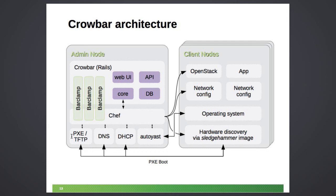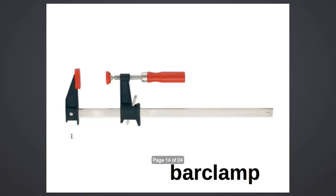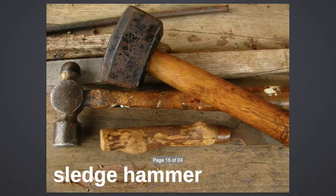The admin server talks to the client nodes and takes care of hardware inventory discovery and deploying the operating system. Hardware discovery operates through a custom boot image we call a sledgehammer — that's a historical thing. The project has some slightly strange names, but after a while you stop noticing. Once you've deployed all the hardware and the OS, you deploy OpenStack on top. In case you're wondering, a bar clamp is what it looks like in real life — in Crowbar it just means a plug-in, essentially. And that's a sledgehammer.